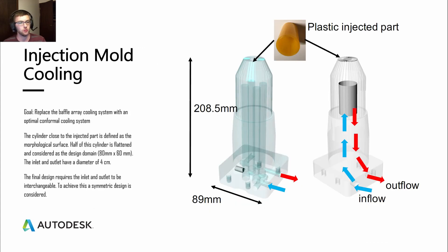If we apply this to the injection mold cooling, we have this problem here. We have this cooling system and we're trying to replace the original one, which is just this baffle array cooling system. We want to replace it with this conformal cooling system. On the right-hand side, we choose a cylinder close to the injected part, and we define this as the morphological surface. That's this gray cylinder you see on the right picture. Half of the cylinder is flattened and considered to be the design domain, which is 80 by 60 millimeters. The inlet and outlet both have a diameter of four centimeters. One of the very important criteria is it needs to be symmetrical. The inlet and the outlet need to be able to be swapped. We will look at how we can address that.